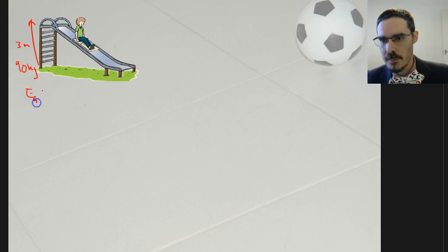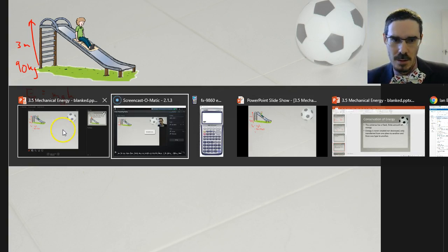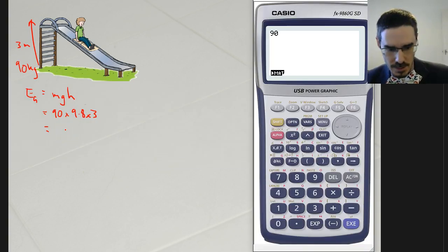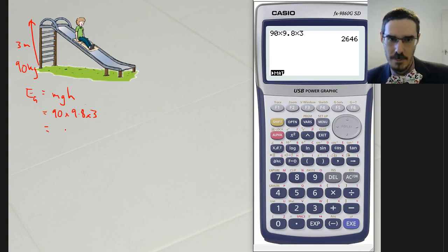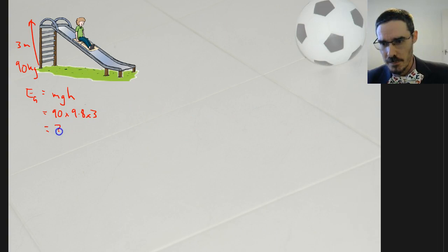So let's work out how much gravitational potential energy you gained. Gravitational potential energy is mgh, or remember, it's the force against the going up, which is the weight force, times the displacement. So 90 times 9.8 times the height of 3 meters. I'm not going to try and do that in my head. 90 times 9.8 times 3. 2,646 joules. Energy is measured in joules.